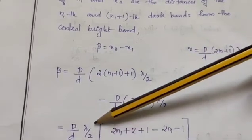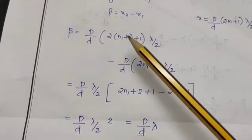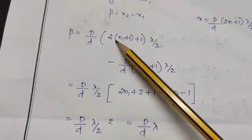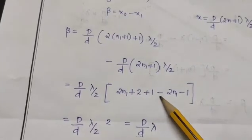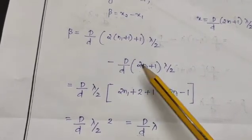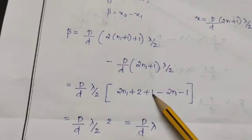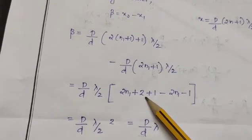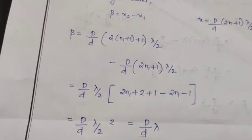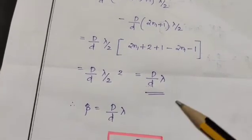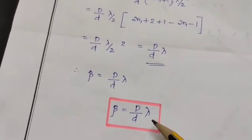Taking (D/d)·(lambda/2) common: beta equals (D/d)·(lambda/2)·[(2n1+2+1) minus (2n1+1)]. The 2n1 terms cancel, and +1 and -1 cancel, leaving a factor of 2. Therefore beta equals D·lambda/d, confirming the same result.